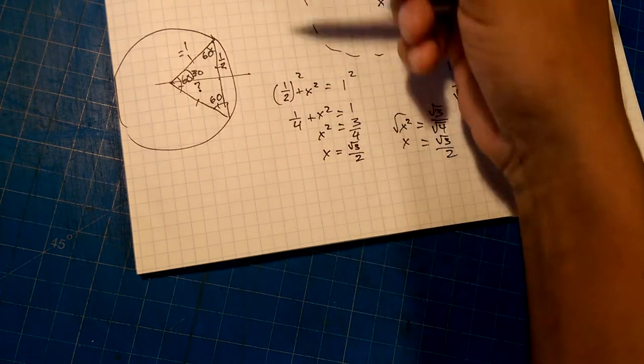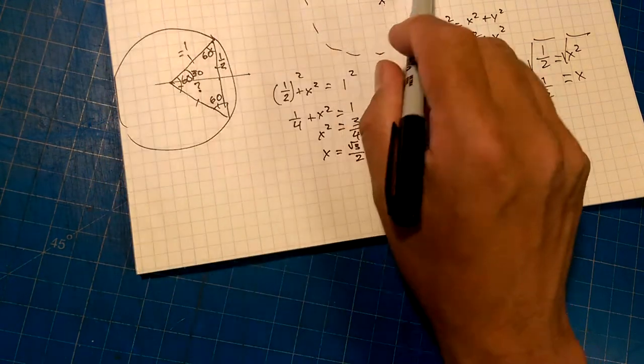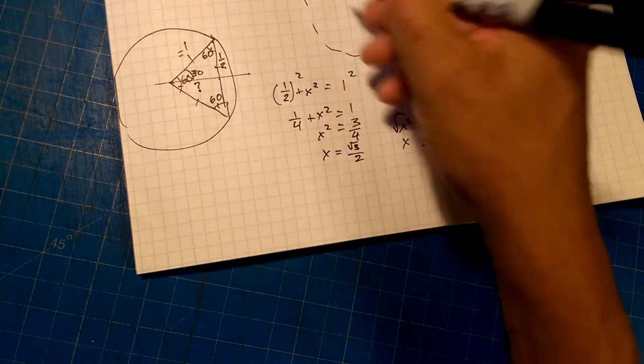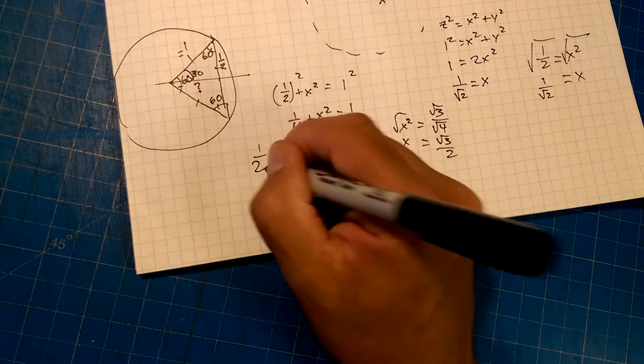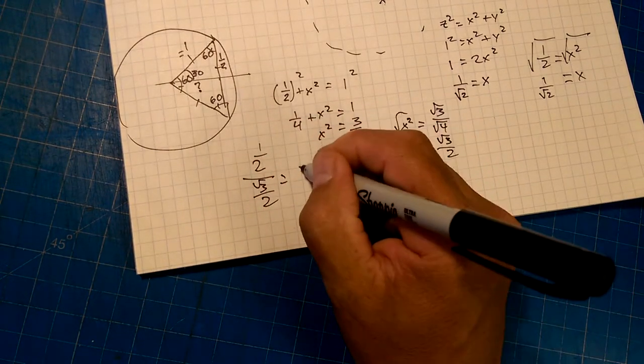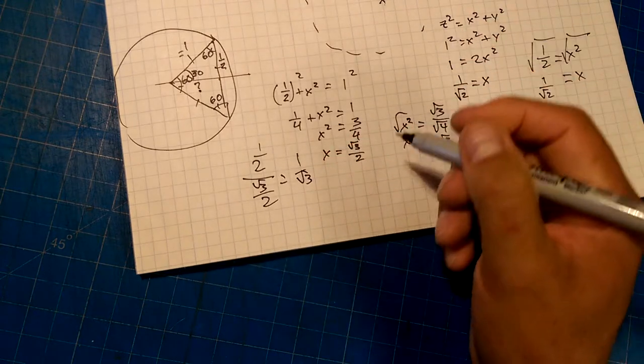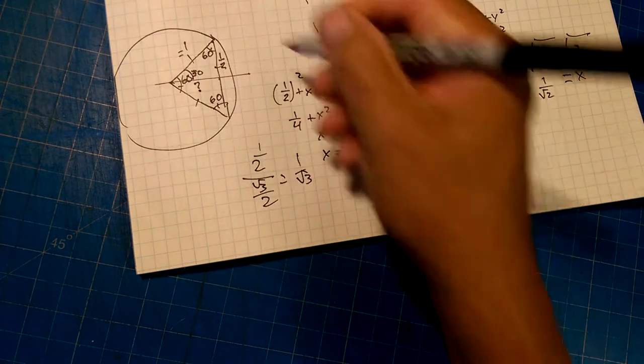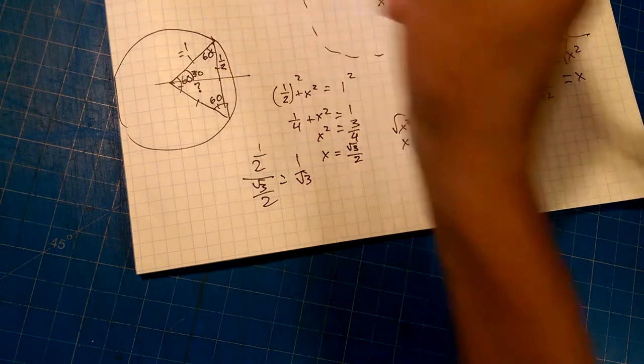Now, tan is root 3 over 2 divided by root 3 over 2 is 1 over root 3. Invert and multiply, the 2's cancel, I think.